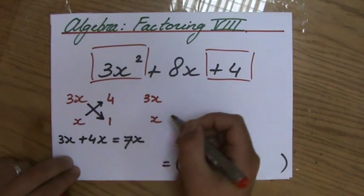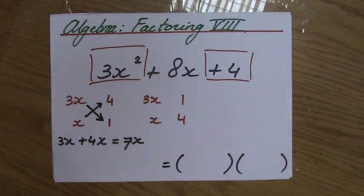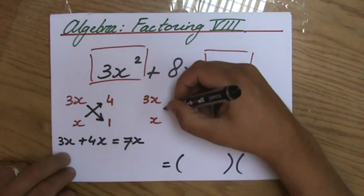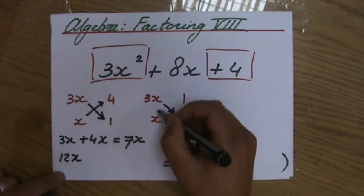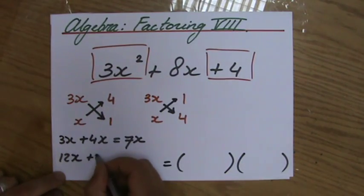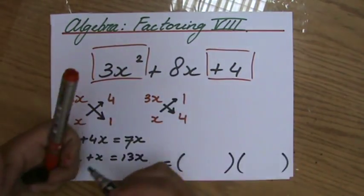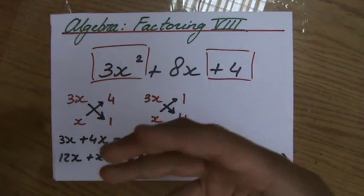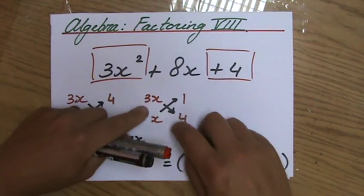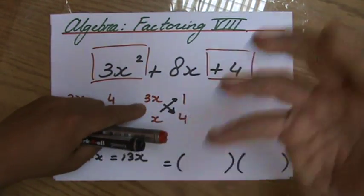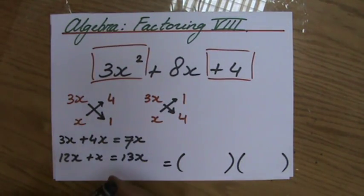So I continue with 3x and x, and let me just turn it around: 1 times 4 is also 4. Cross multiply again. 3x times 4 is 12x, and x times 1 is x. That together is 13x. Is that my middle term? No, it's not. If you have more experience doing this, you would not have chosen this one, because you already would have seen that 3x times 4 is 12x — you're never going to get that 8x. Because we're trying to get that middle term, the 8x.